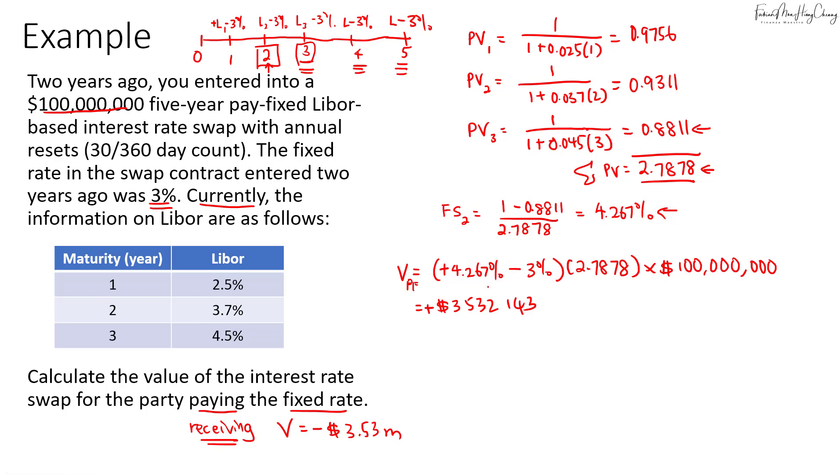So when you look at the timeline, what's happening here is that as of year two, you still have three more payments to go year three, four, and five. So initially your contract, you receive LIBOR and pay 3%.